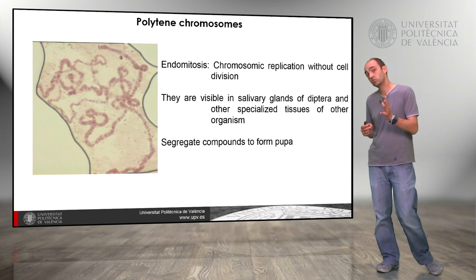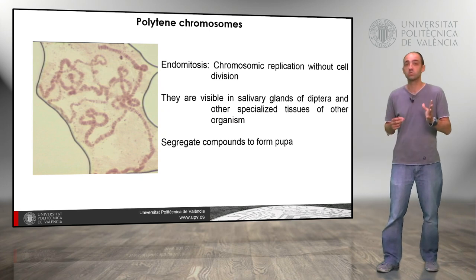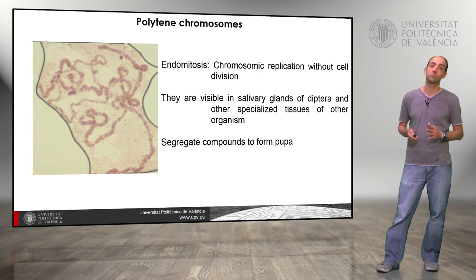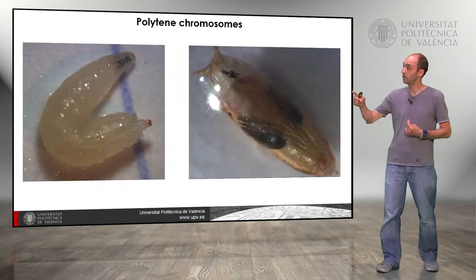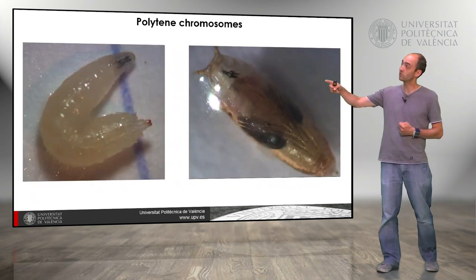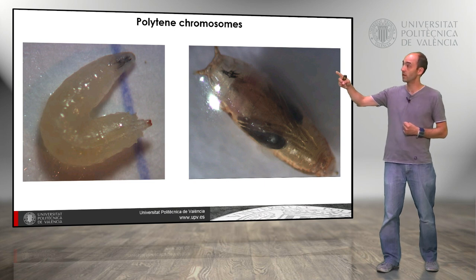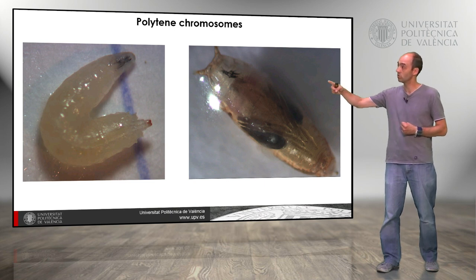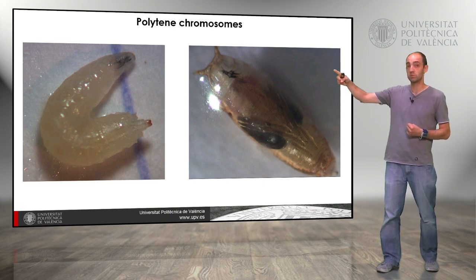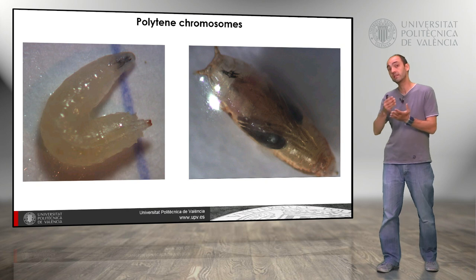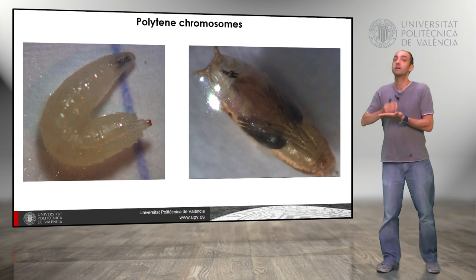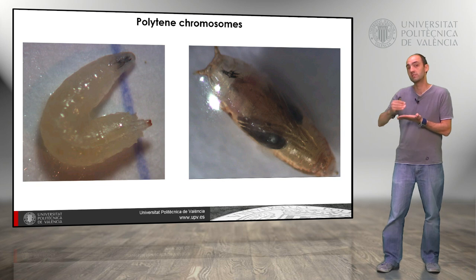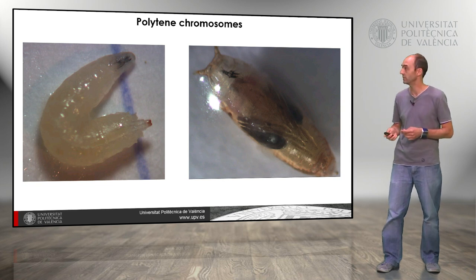Drosophila uses these chromosomes in the salivary glands to produce the compounds that will form the pupa. The pupa is formed from the larva, so the larva must produce all the necessary compounds. In the salivary glands, the genes are replicated many times so they can be used to produce large amounts of compounds simultaneously.